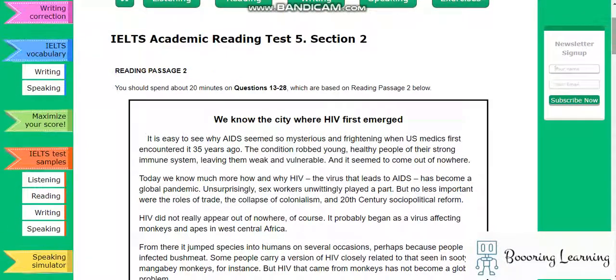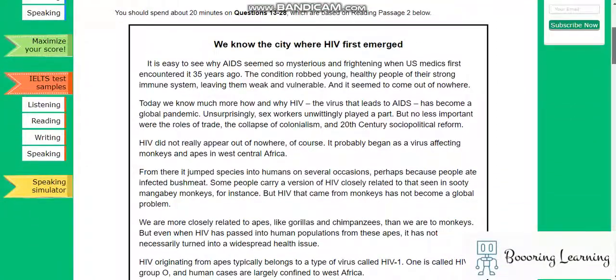Hello, it is IELTS Academic Reading Test 5, Section 2. We know the city where HIV first emerged.